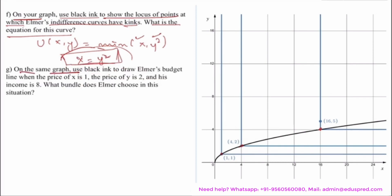Now the question says, on the same graph, use black ink to draw Elmer's budget line with the price of x as 1, price of y is 2 and his income is 8. What bundle does Elmer choose in this situation? Let px represent the price of good x which is 1, py represent the price of good y which is 2 and m represent his income. The standard equation of the budget line is x·px + y·py equals m such that your expenditure is equal to income and the consumer is having well-behaved preferences so he would be exhausting all his income.